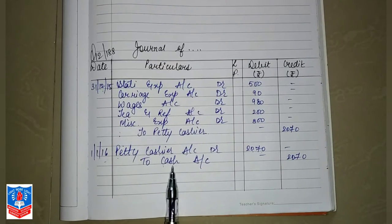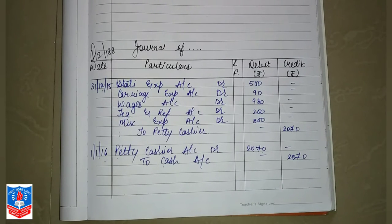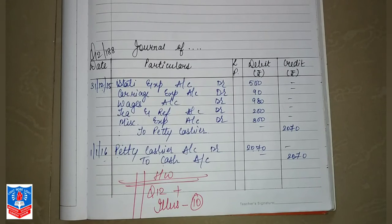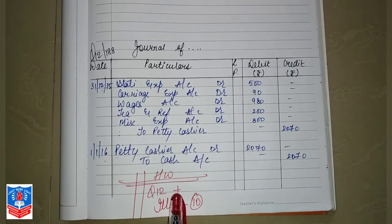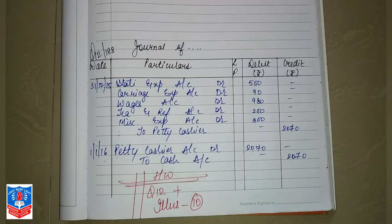And main cashier says that cash has gone from me, how much has gone? 2070. I hope that you people have understood this journal entry in the books of main cashier. Now your today's task is question number 12 plus illustration number 10 is of the same type. Thank you students.